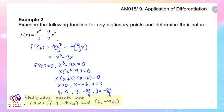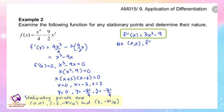Now we test all three points to determine their nature. Find the second order derivative: f double prime equals 3x squared minus 9. At the first point (0, 0), f double prime of 0 equals negative 9. The value is negative, so it is a maximum.